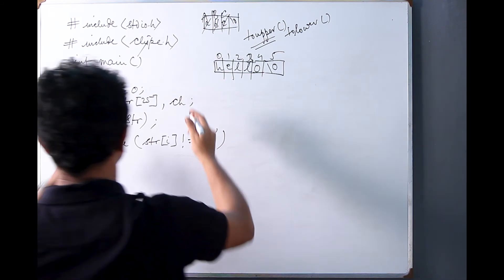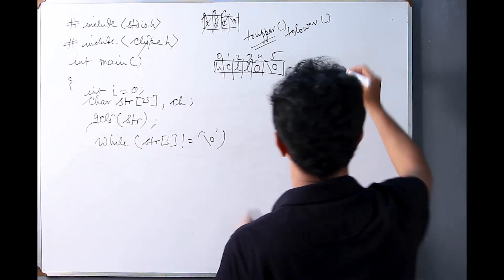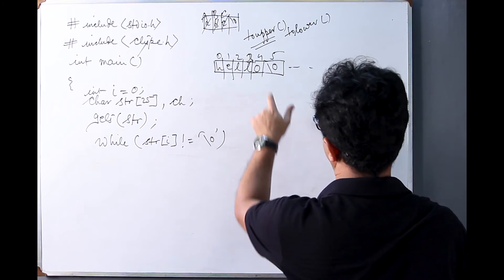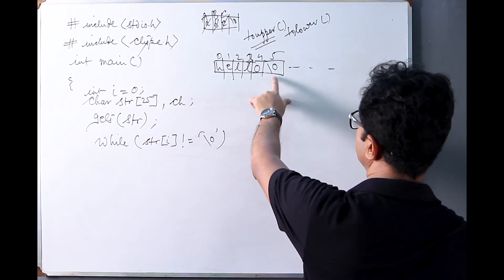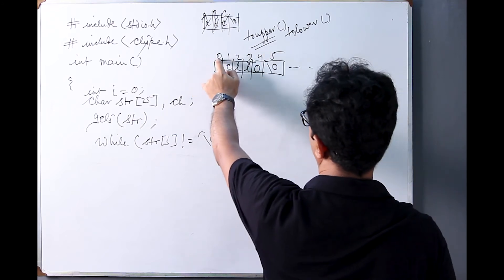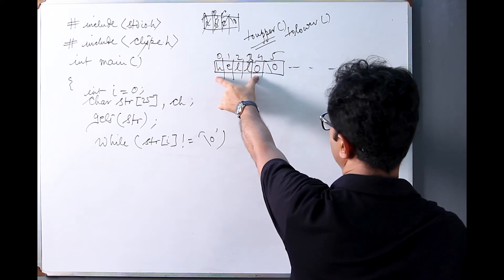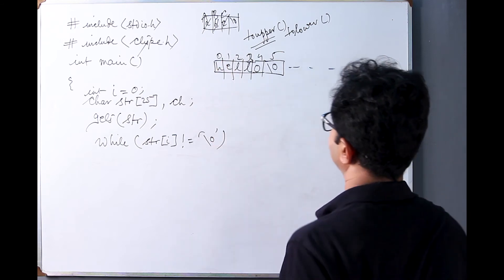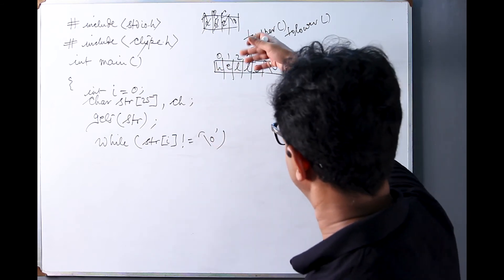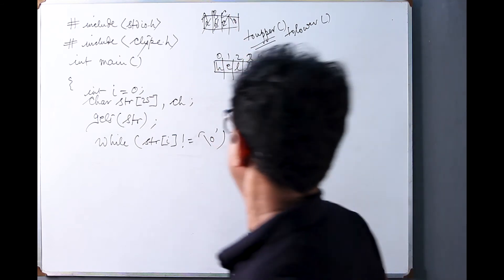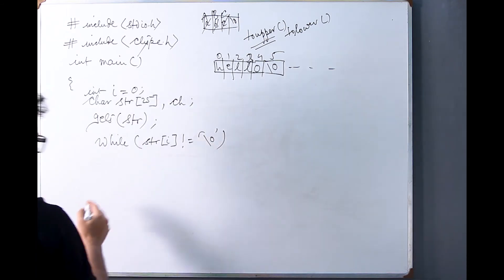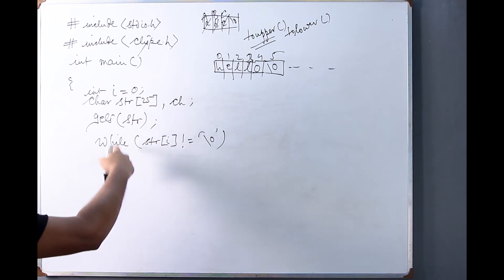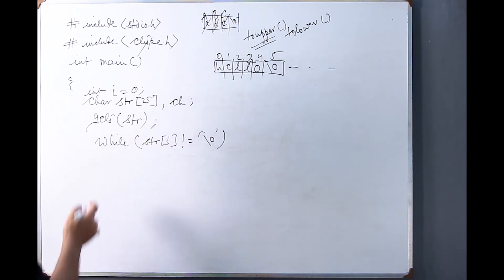The string has a maximum of 25 places. The user has entered 'hello' and pressed Enter, so the null character is placed at index 5. Indices 0 through 4 hold the characters of the string which are to be converted to uppercase. As long as we do not encounter the null character, we write this condition to implement that.